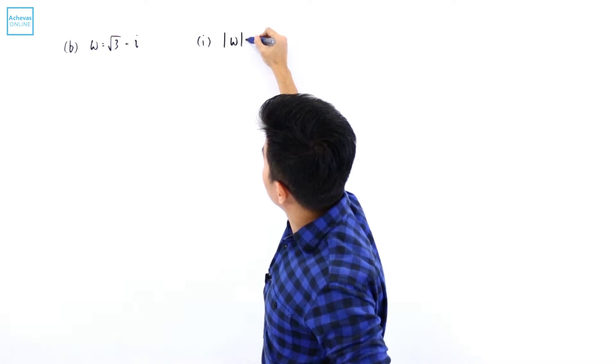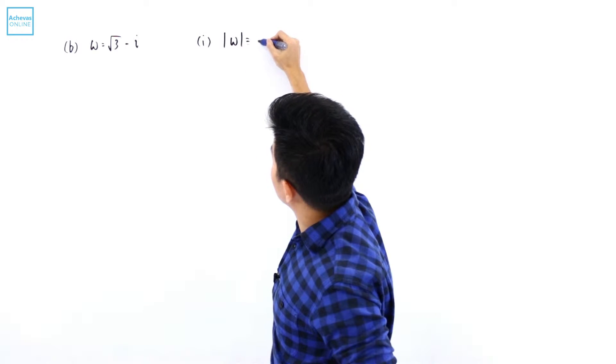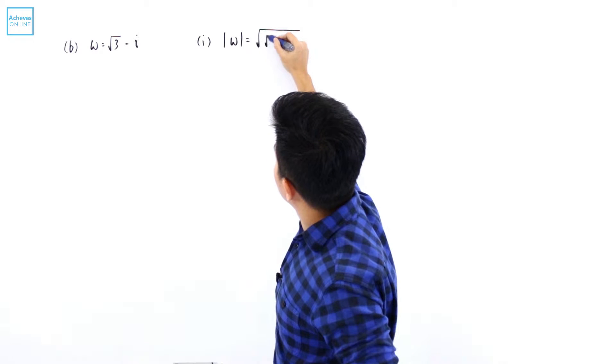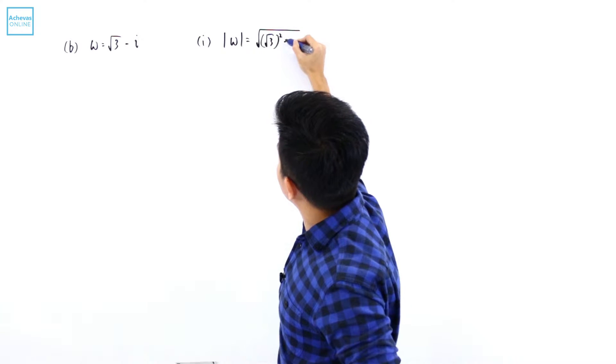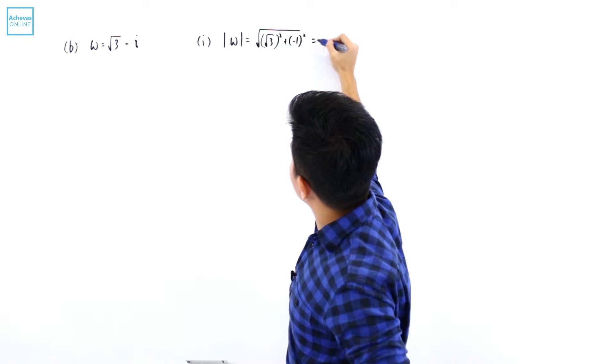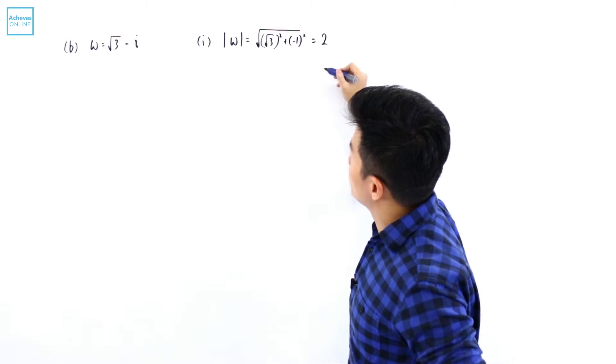I want to find what is the modulus of w. Modulus of w is going to be square root of square root of 3 square plus minus 1 square. So this is going to be square root of 4, it is 2.